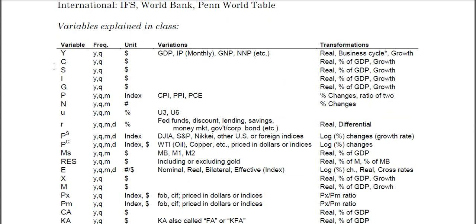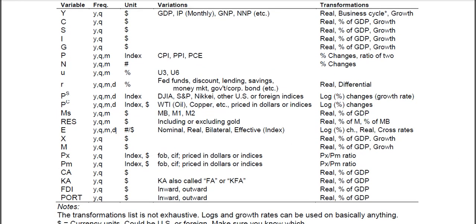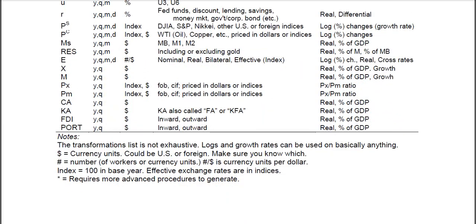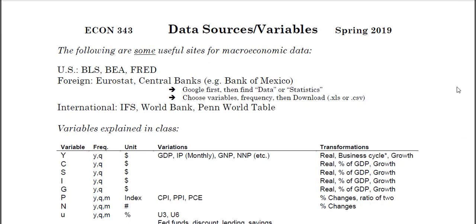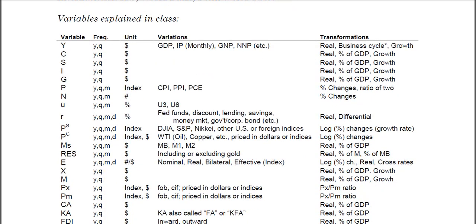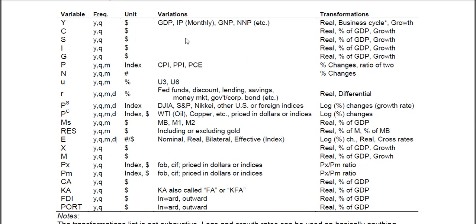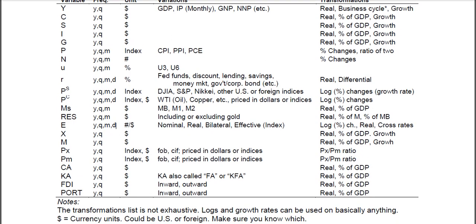You might see different letters — for example, I use L for labor sometimes. Just make sure when you're looking at these data that they're in the right units and that you're converting correctly. If you have one variable in pesos and one in dollars, you might have to use the exchange rate. Also make sure your percentages line up — if you have 2% as 2 and subtract 1%, make sure it's as 1 and not 0.01. So now we know some sources to go to, both in the U.S. and other countries, and we have a beginning list of macro variables — what they look like, their frequency, different variations, and what transformations we can do.